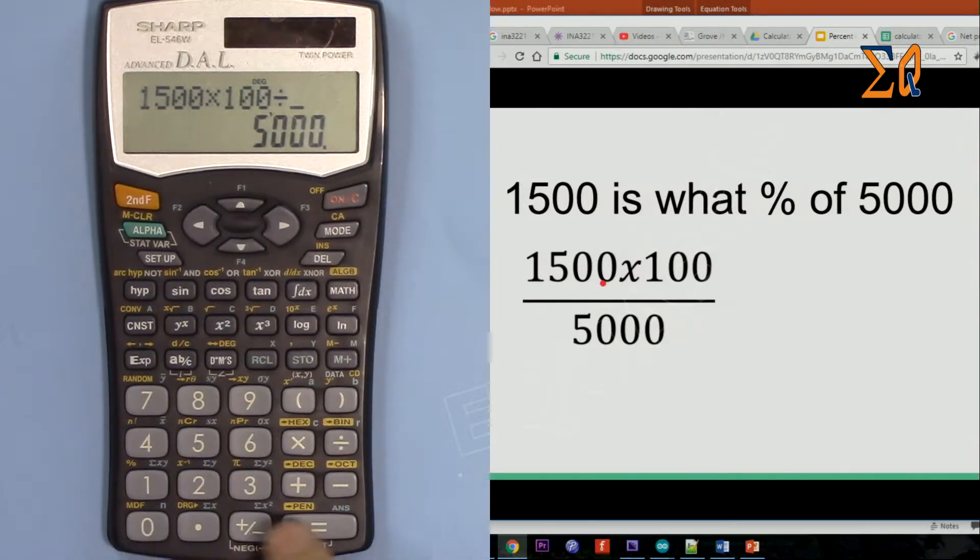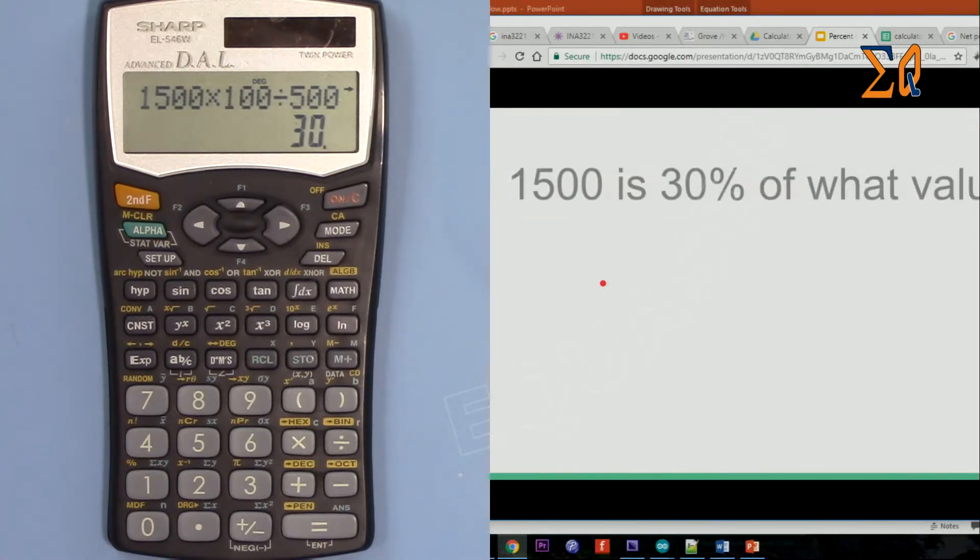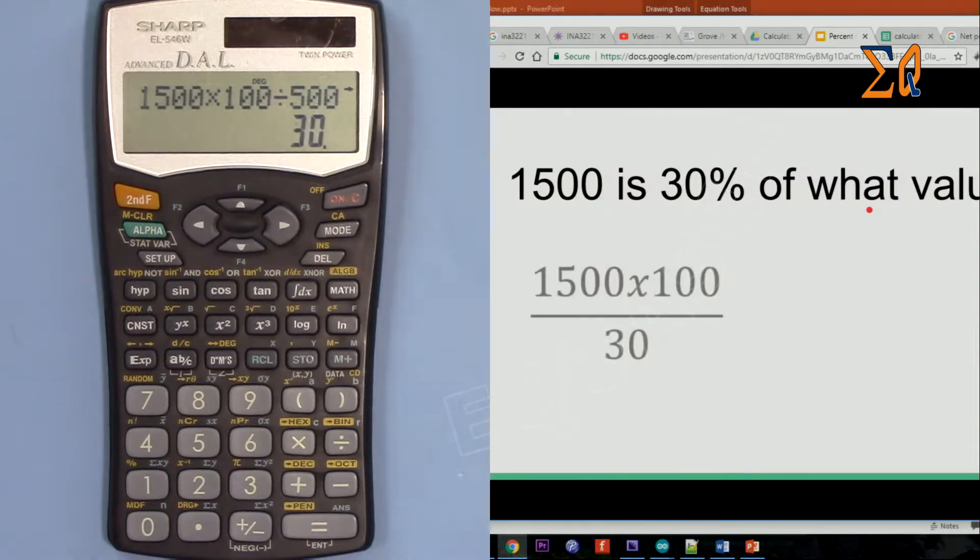The third way would be 1500 is 30% of what value. Now we want to find that 5000, we know the answer but let's see how we can do it.